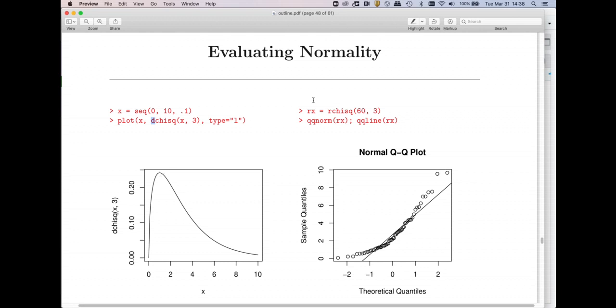When I generate a QQ plot, let's go make 60 observations from this. I use r chi-square to make random values. So these are the 60 points that I've just created.